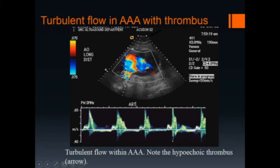In aneurysms with thrombus, turbulent flow can be seen with Doppler. On this image, we see an abnormal aortic waveform with turbulent flow and spectral broadening. The color Doppler image shows turbulence, while the thrombus itself is markedly hypoechoic and not well seen on the grayscale portion of the image.